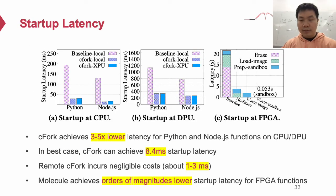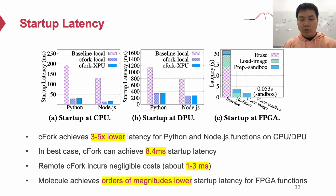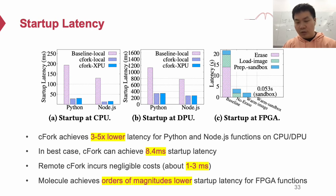First, we compare the startup latency with baseline ContainerFork in a single-PU and cross-PU setting in CPU and DPU. We choose Python and Node.js applications for the test. As a result, ContainerFork achieves 3 to 5 times lower latency for Python and Node.js functions on CPU and DPU. In the best case, ContainerFork can achieve 8.4 ms startup latency. Because of the good performance of neighbor IPC, remote ContainerFork only incurs minor cost of about 1 to 3 ms. We also break down the optimization on FPGA startup, and results show that we can achieve orders of magnitude lower startup latency for FPGA functions compared with the baseline.